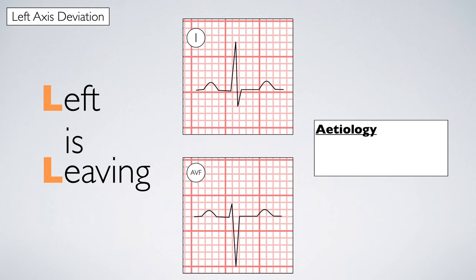Left axis deviation can be caused by factors such as left ventricular hypertrophy, left bundle branch block and inferior myocardial infarction.